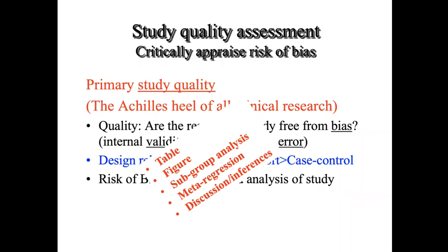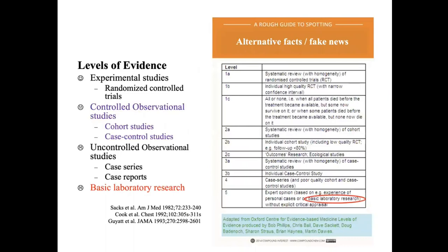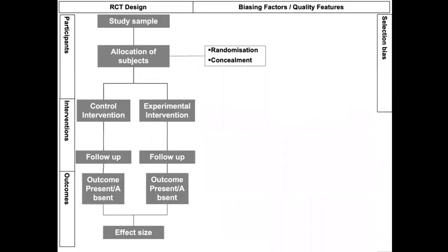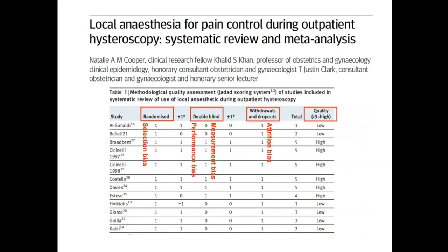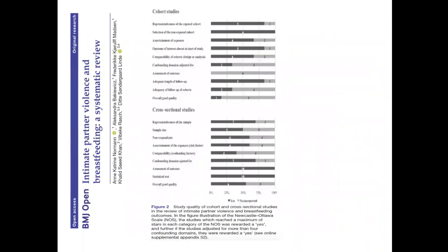Tomorrow we are going to look at how we can use the information concerning quality in various forms of meta-analytic techniques that we will deploy before we generate inferences. For construction of the table, I showed you an example where it's possible to see how the various biases in selection, performance, measurement, and attrition can be presented in a simple way and then summarized as a score, or they can be presented as a figure.